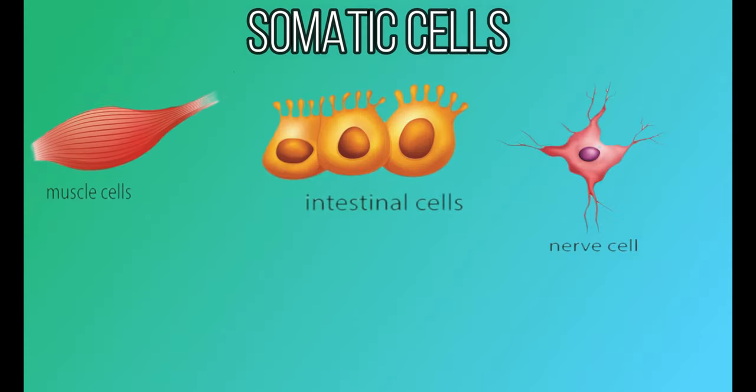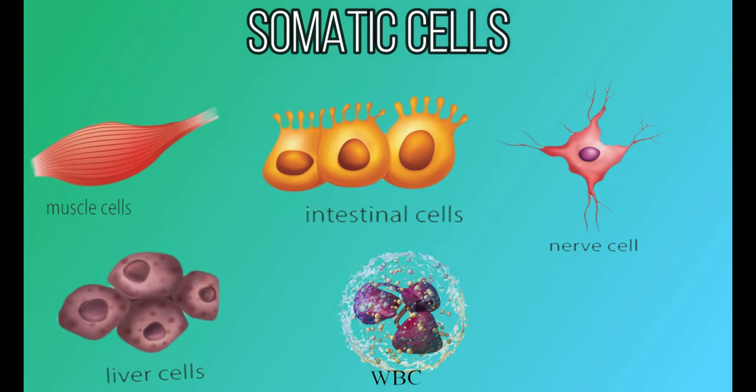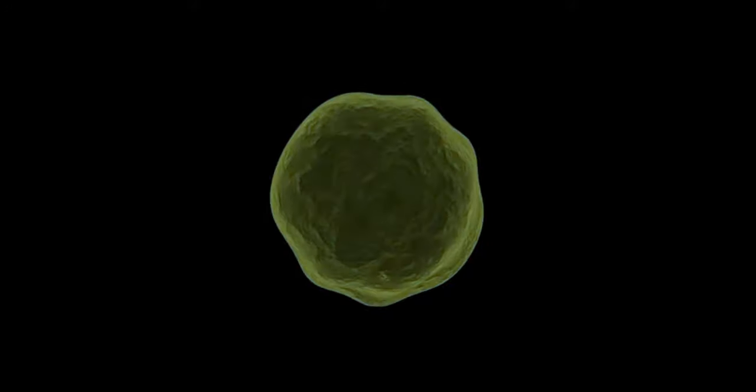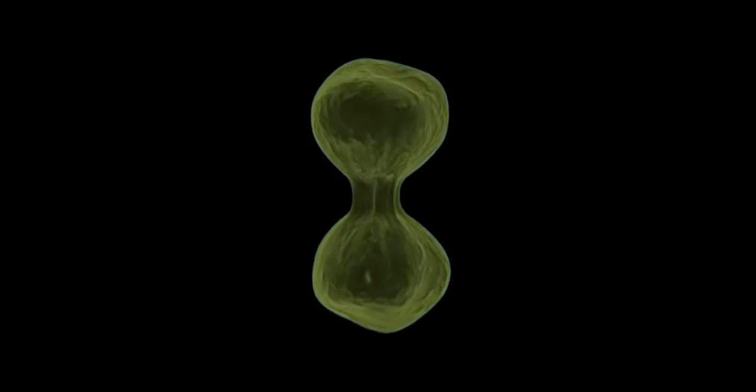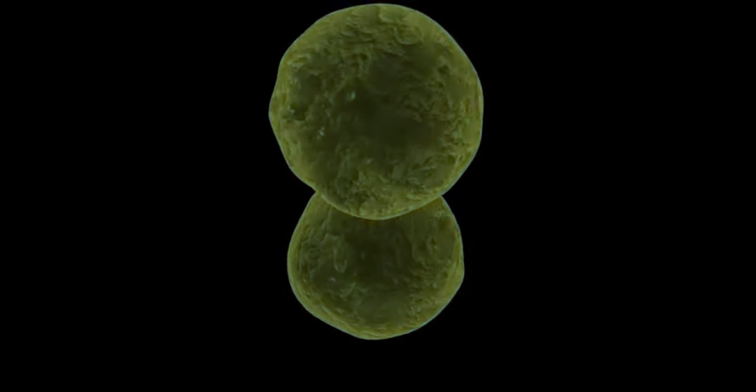Somatic cells, like muscle cells, intestinal cells, nerve cells, liver cells, white blood cells, and so on, all multiply by mitosis, except nerve cells.